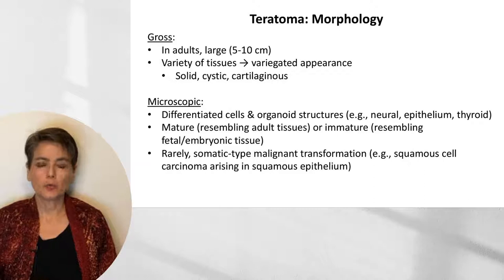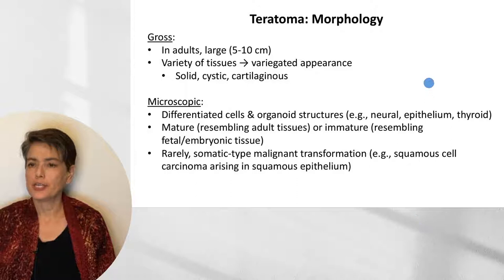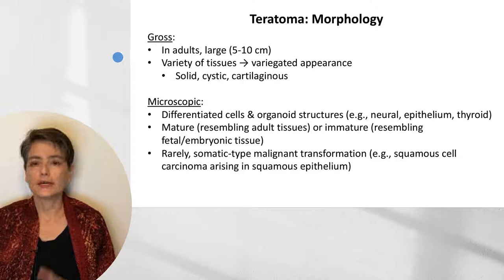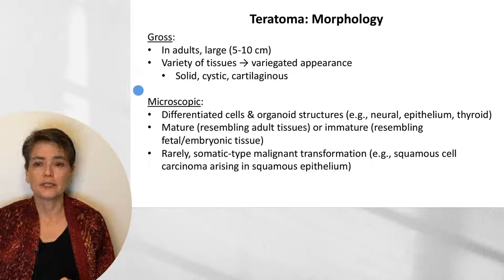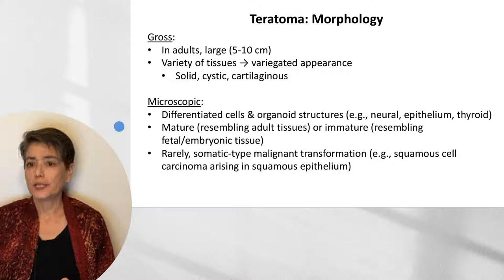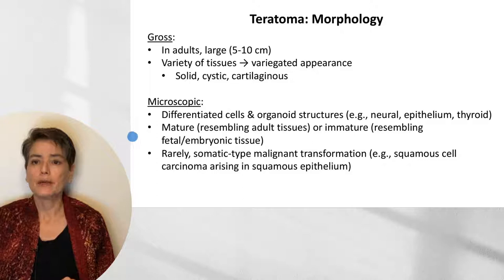Teratomas are an interesting tumor — we encounter these in the ovary as well. They show multi-lineage differentiation and can be seen in both adults and children. In adults they can be quite large, 5 to 10 centimeters, and tend to be somewhat smaller in children. Because they differentiate down multiple lineages, we get a variety of tissues leading to a variegated appearance that can be solid, cystic, or cartilaginous. Microscopically, we see differentiated cells and organoid structures — neural, epithelial, or even thyroid differentiation — showing either mature tissue resembling adult tissue, or immature tissue resembling fetal or embryonic tissue. Uncommonly, we get somatic-type malignant transformation, for example a focus of squamous cell epithelium that transforms into squamous cell carcinoma.